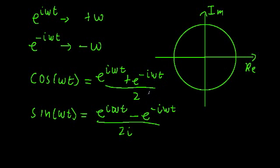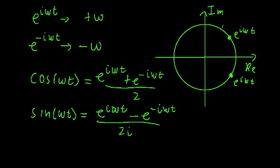Let's just show graphically what I mean by that. Let's say we have the function e to the i omega t and e to the negative i omega t. At some time t, e to the i omega t is at one point and e to the negative i omega t is at another point. We want to find a way to remain on the real axis, but the problem is when we rotate we're going to go up and down, so we're going to have some imaginary component. We want to do something with these two functions to remove that imaginary component and just stay on the real axis.